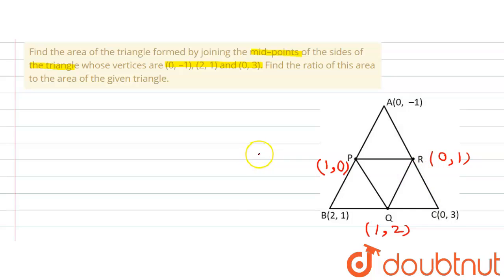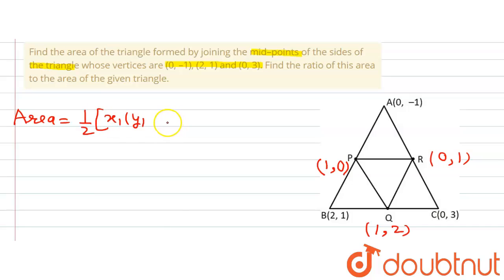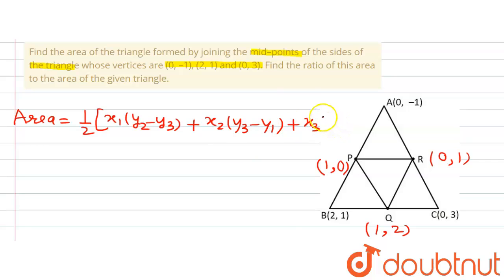Now, the formula for the area of a triangle that we are going to use is: when the coordinates of the three vertices are (X1, Y1), (X2, Y2) and (X3, Y3), then the area of the triangle equals half of X1(Y2 - Y3) + X2(Y3 - Y1) + X3(Y1 - Y2). Using this formula, we are going to find the area of PQR and ABC and then compare them.